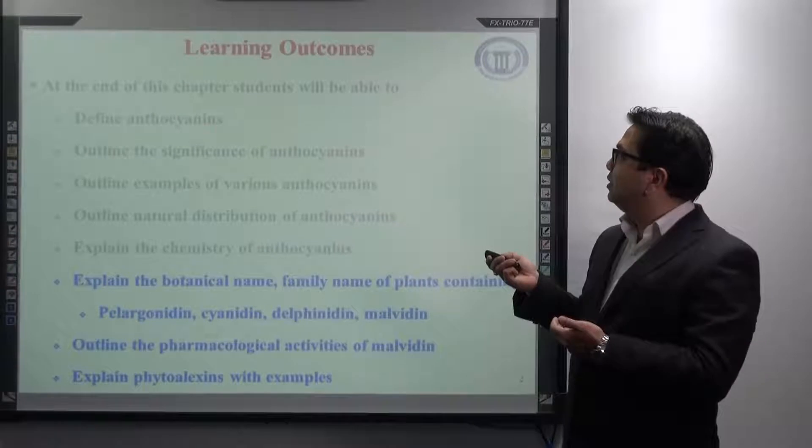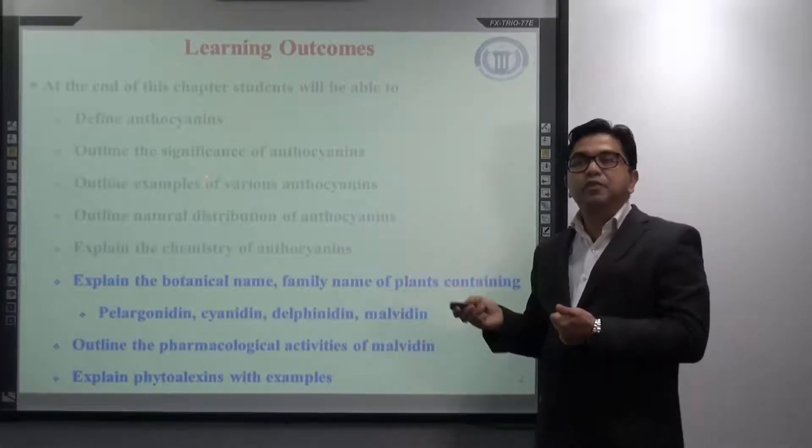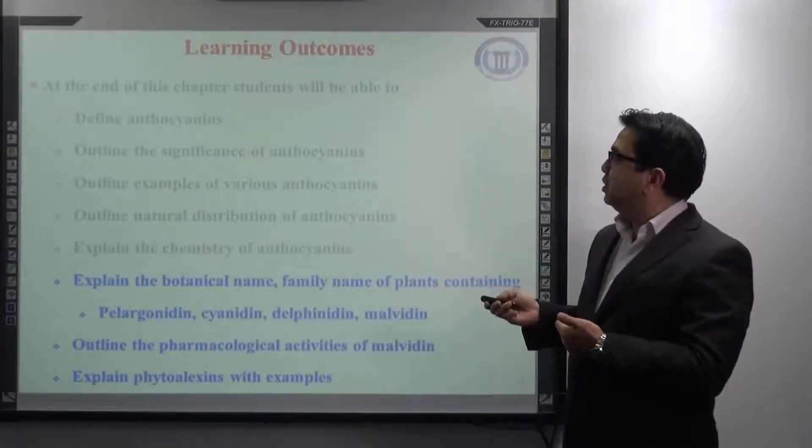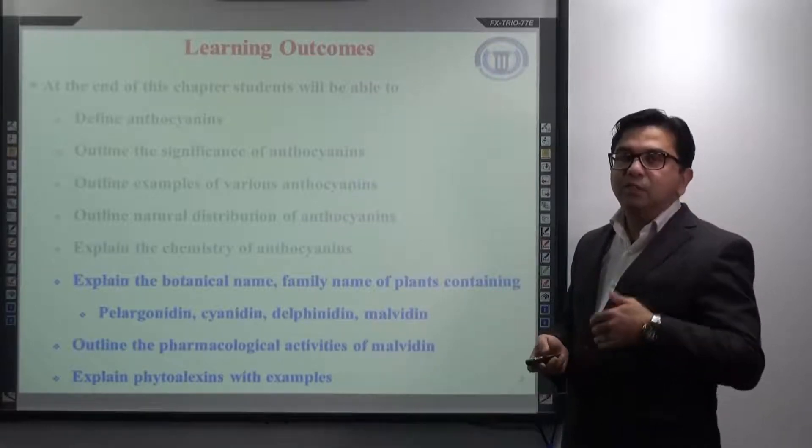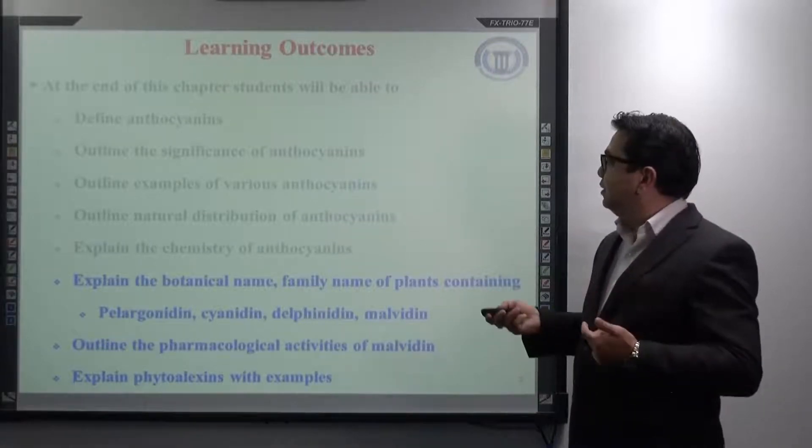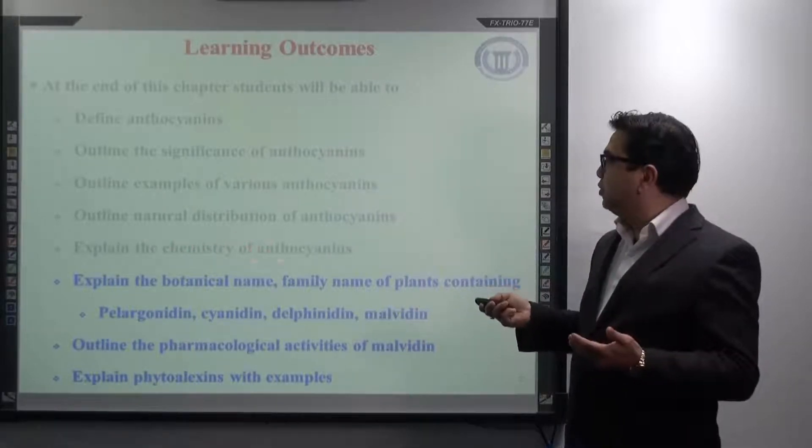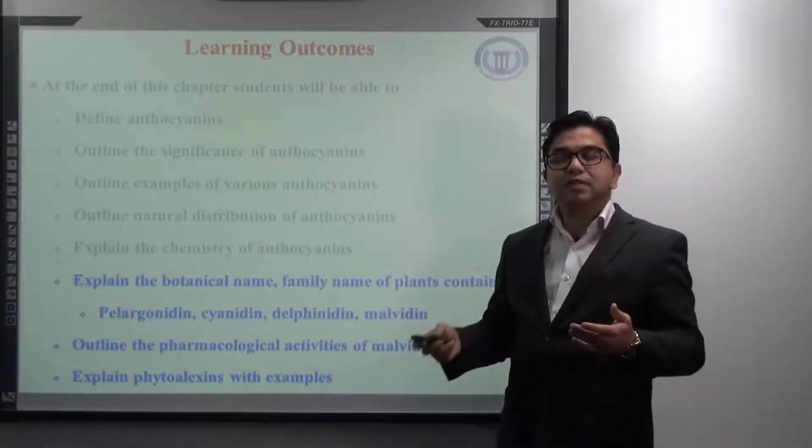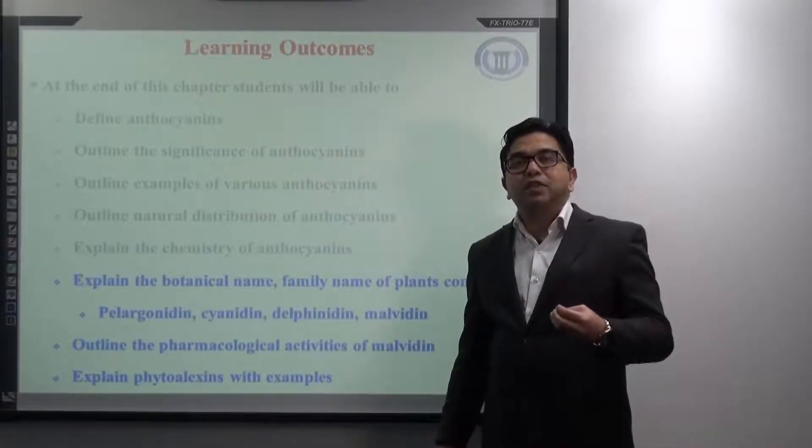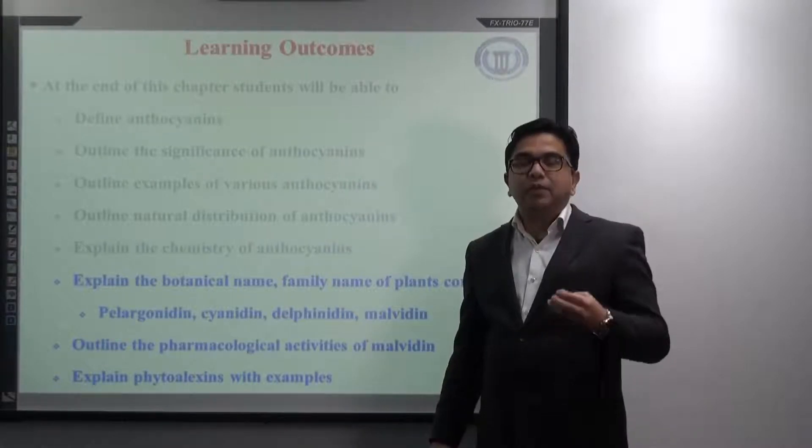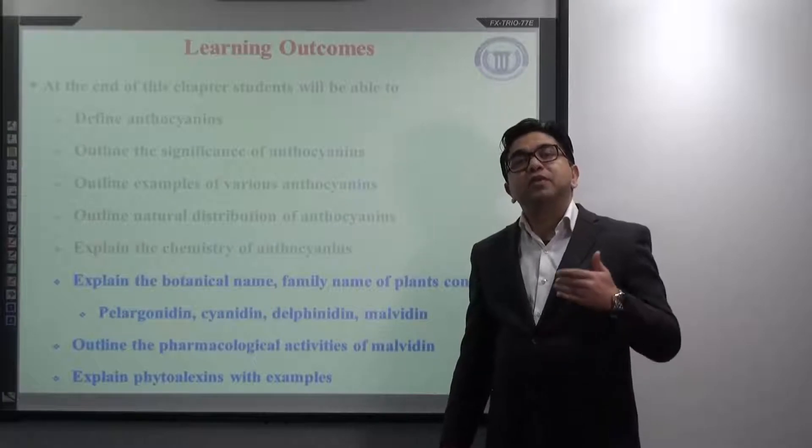So far we have discussed the definition of anthocyanins, significance of anthocyanins, examples of various anthocyanins and natural distribution of anthocyanins. Today we will see more natural distribution and we discussed in detail in part 2 the chemistry of anthocyanins where we mainly discussed the importance of stability since they are highly used as food colourant.